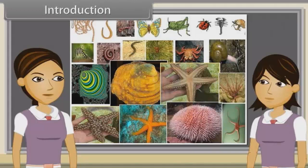Now we are going to discuss characteristics of Hemichordates, Chordates, Vertebrates, Cyclostomata, Chondrichthyes, Osteichthyes, Amphibians, Reptilia, Aves and Mammalia.